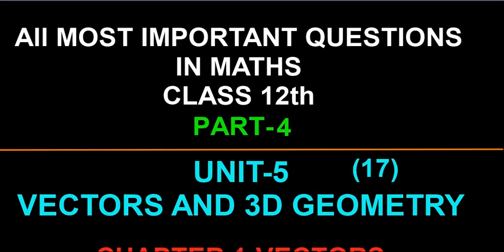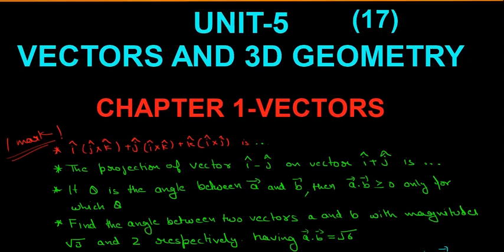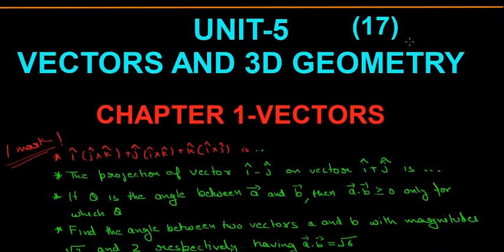The next unit is the fifth unit which is vectors and three-dimensional geometry. This unit comes with 17 marks weightage. This is a really important and easy unit because vectors are really easy.